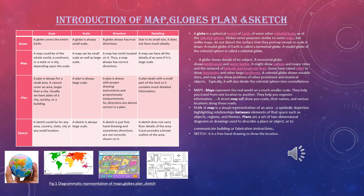The map is very important because you can get accurate information about places with the help of a map. People from different fields use maps for different purposes. Initially, maps were used mainly for defense and strategic purposes — army personnel plan their strategy according to information derived from the maps.